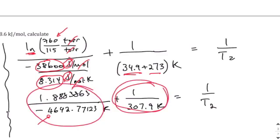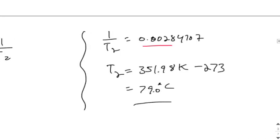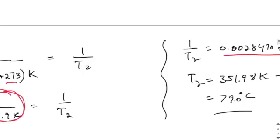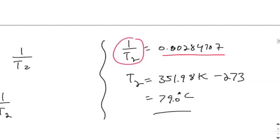So once I add this fraction with that fraction, I would get this number right here, 0.00284707 as 1 over T2. And then to get T2, I will take 1 over that number, which gives me 352, roughly, Kelvin. Subtract 273 out of that will give me the Celsius temperature. So that will be 79.0 Celsius.